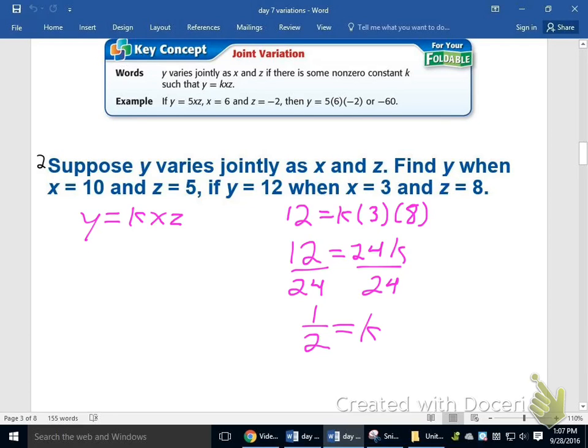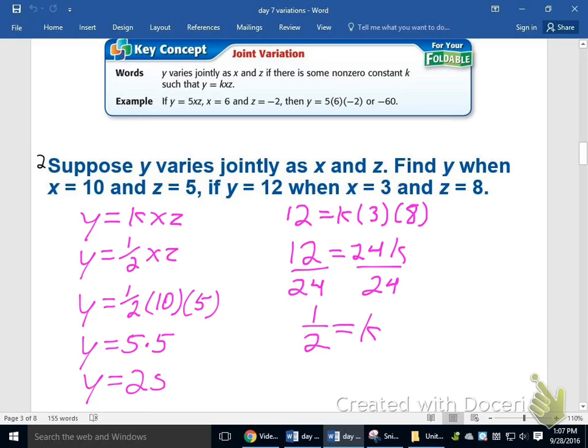So now I've got a function. My function is y equals 1 half xz. Now time to finish the problem. It said find y when x equals 10 and z equals 5. I'm going to throw 10 in for x and 5 in for z. And just multiply that out. Half of 10 is 5. 5 times 5 is 25. And I'm done.